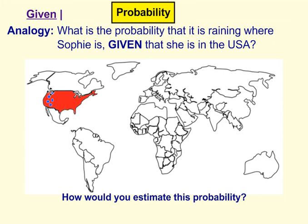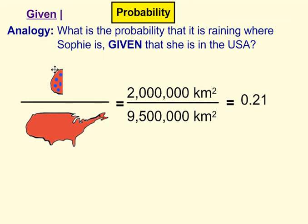You'd just look at the area that it's raining and think: what fraction is that of the entire United States? In essence, you divide the area of the west coast by the entire area of the United States. The entire area of the United States is 9.5 million kilometres squared. The west coast — maybe that's 2 million kilometres squared — and you'd get a probability of 0.21, which makes sense considering this is about a fifth of the entire area.